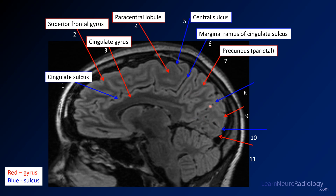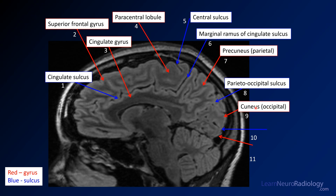Here you have a sulcus which divides the parietal lobe from the occipital lobe — the parieto-occipital sulcus. If you have a precuneus, it's easy to think of the name for this next structure: the cuneus, which is part of the occipital lobe. Here you have one little sulcus — that's the calcarine fissure. And finally, your last gyrus here is the lingual gyrus.